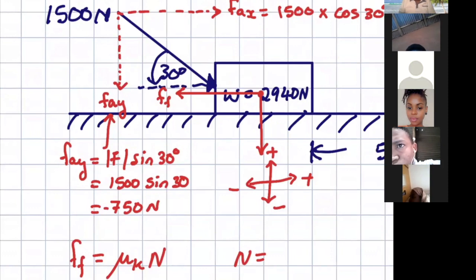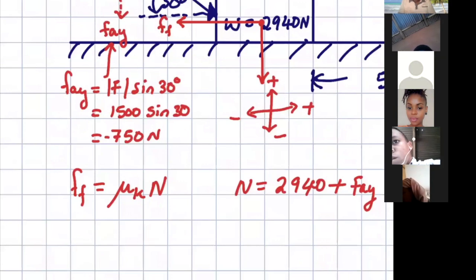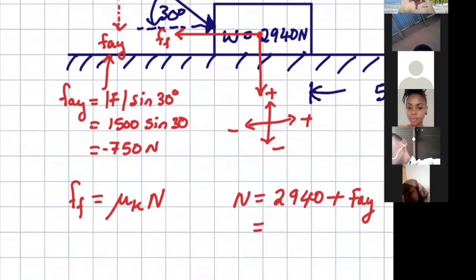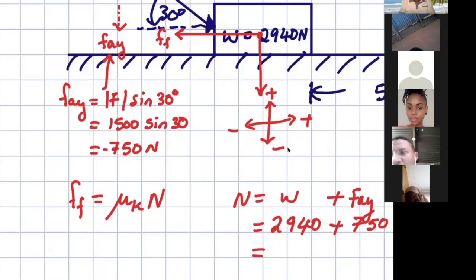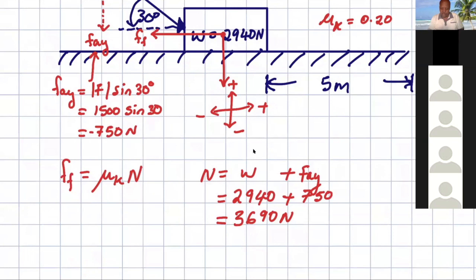So the force that's going to be the normal force, it's obvious then to see that first, you have to balance the weight. And after balancing the weight, you need to also balance the component, the fay. So fay, we know it is 750. So now the normal force will be 3690.